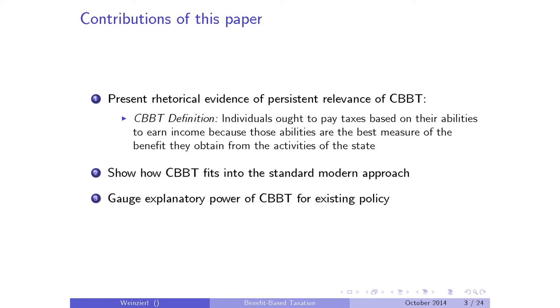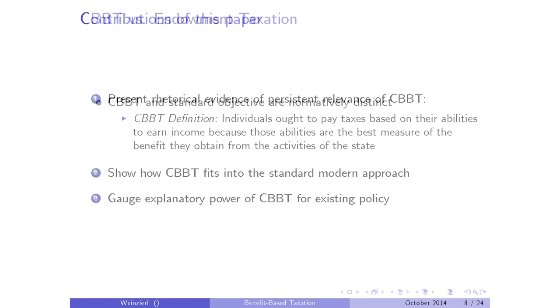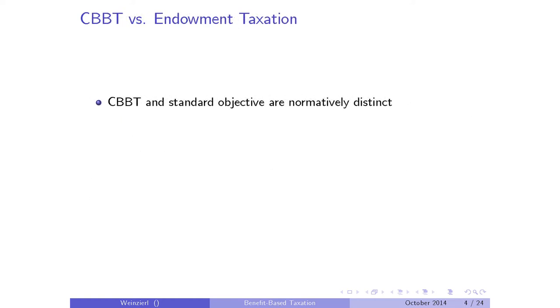One slide on endowment taxation: I just said you can put the classical benefit-based criterion right into the standard modern approach, and that's true, but normatively they're quite distinct. I want to give you a clear sense of why.